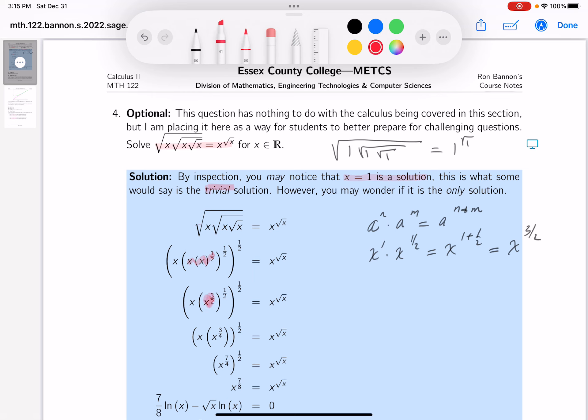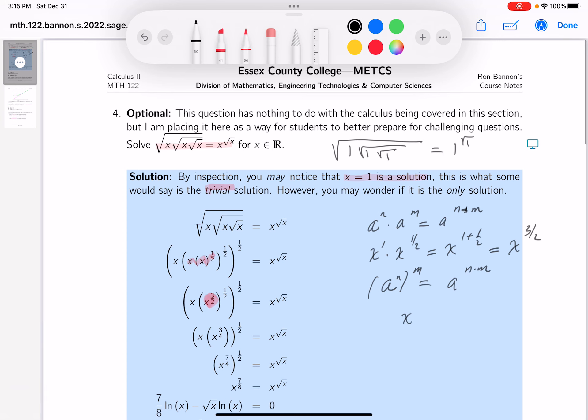The next rule I'm noticing is I'm looking at this x to the 3 halves raised to the 1 half power. There's another rule I know from basic algebra. It's this one over here. That's a to the n times m. Let me do that. We're going to get x to the 3 halves to the 1 half, which would be x to the, well, 3 halves times 1 half, which would be x to the 3 quarters. All right? Let me show you where that's written. That's right over here.